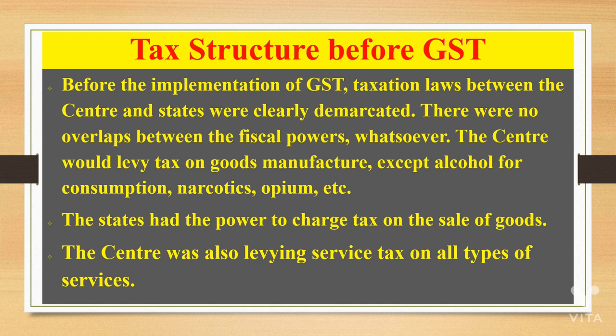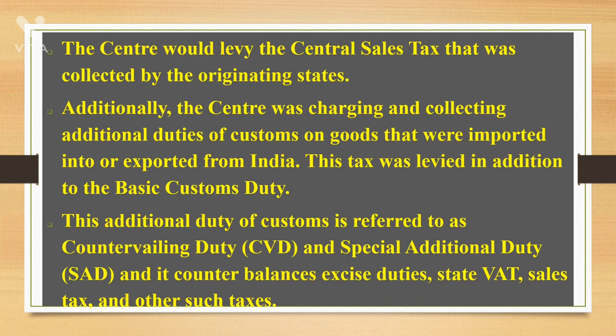Tax structure before GST. Before the implementation of GST, taxation laws between the center and state were clearly demarcated, with no overlaps between the taxing powers. The center would levy tax on goods manufacturers, except alcohol for consumption, narcotics, opium, etc. The state had the power to charge tax on the sales of goods, and the center also levied service tax on all types of services. The center would levy the central tax that was collected by the originating state.